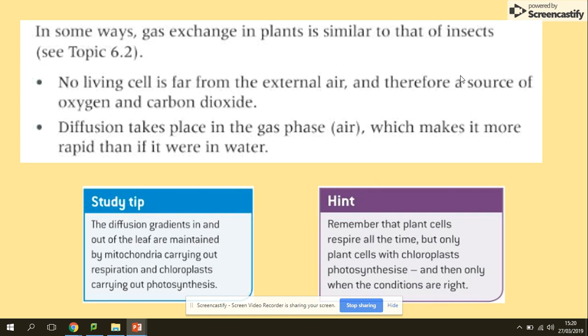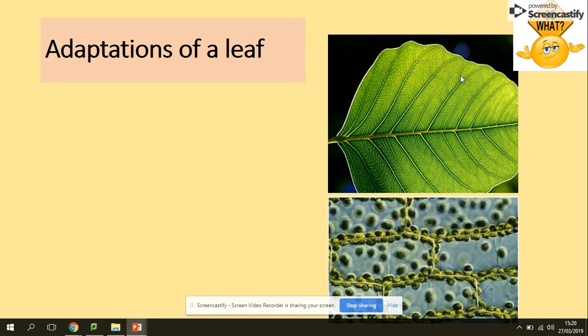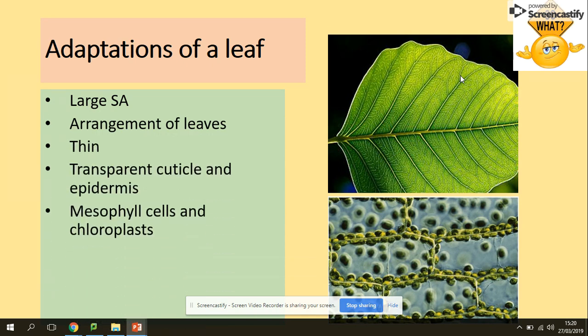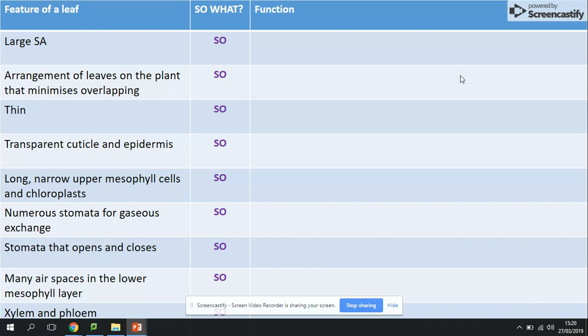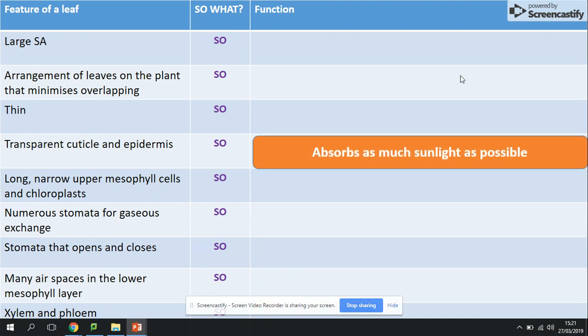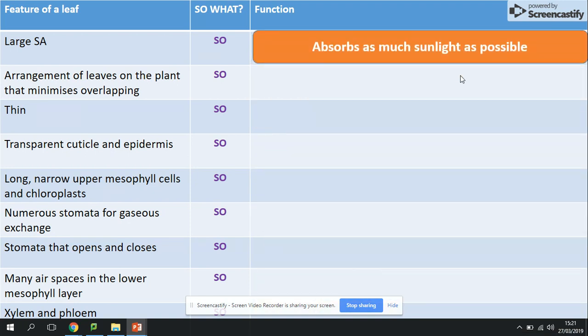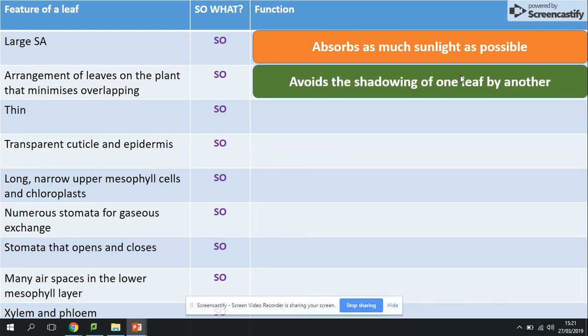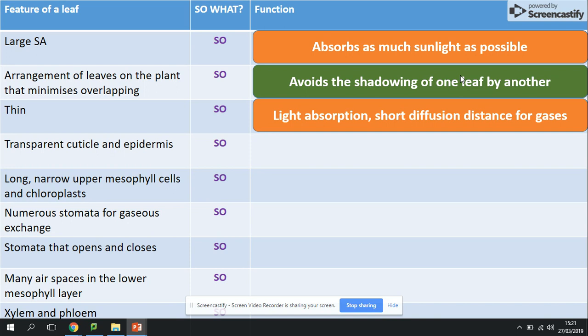So adaptations of the leaf, that's the main aspect of today's session. There are plenty: large surface area, the way the leaves are arranged, they are thin, they've got transparent cuticle and epidermis, mesophyll cells, chloroplasts, stomata, air spaces, xylem and phloem. All those things have got specific adaptations, and how are we going to approach them? Of course with our 'so what.' Large surface area? So what? So can absorb as much sunlight as possible. Arrangement of leaves on the plant that minimizes overlapping? So avoids the shadowing of leaves. Thin? So a short diffusion pathway for light absorption.